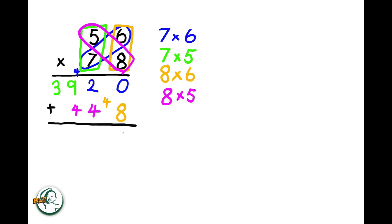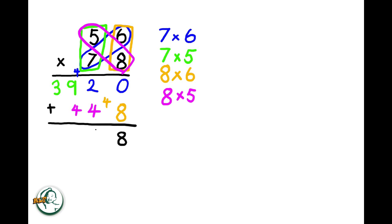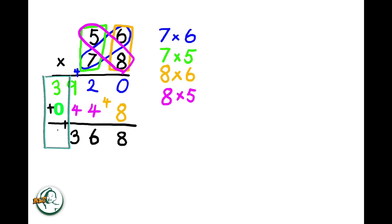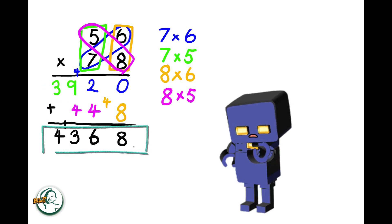Now, we add these two sets of products. Adding 0 and 8 gives us 8. 2 plus 4 is 6. And 9 plus 4 is 13. We write down the 3 and carry over the 1. 3 plus 0 is 3. Adding the carried over 1 to 3, we get 4. Therefore, the product of 56 and 78 is 4368.